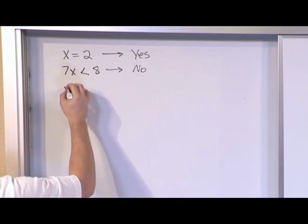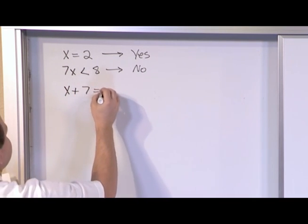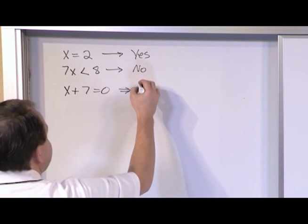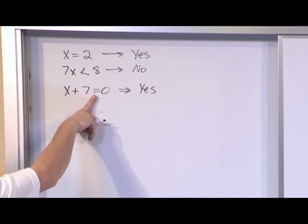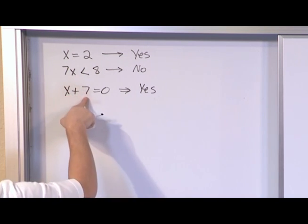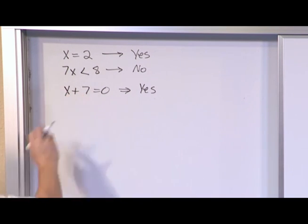What if you had something like x plus 7 is equal to 0. Is this an equation? And the answer is yes. It is an equation. Why? Because you have an equal sign. And what this is telling me is that whatever x is, I need to be able to add 7 to it and then whatever I get has got to be equal to 0.